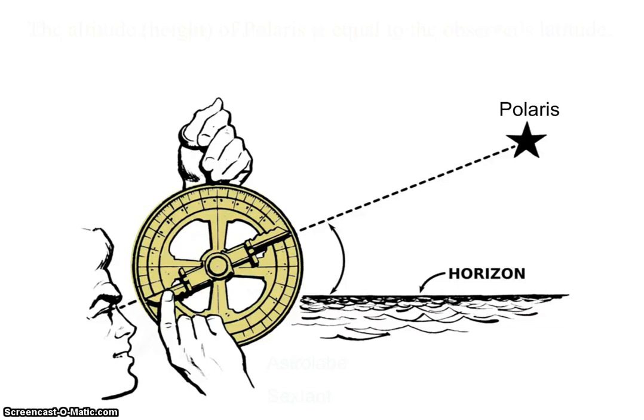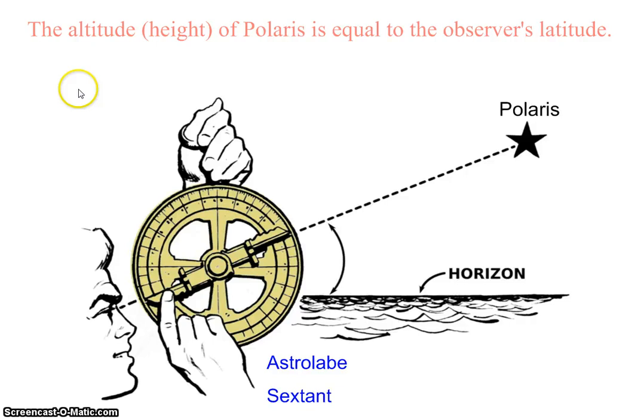Polaris is the scientific name for the North Star. You would go out on your ship at night and use an instrument such as an astrolabe or a sextant. You would find Polaris in the night sky and measure how many degrees Polaris was above the horizon. Now that number of degrees is really important because it turns out that the altitude of Polaris, or the height of Polaris, is equal to an observer's latitude.